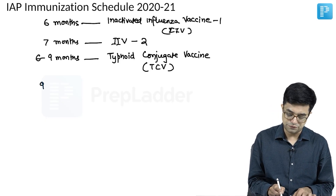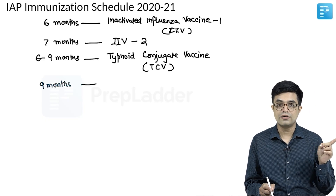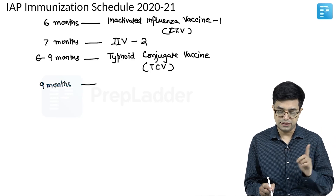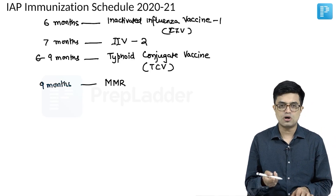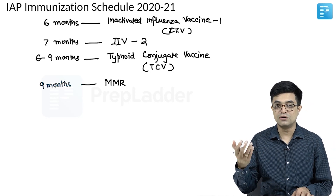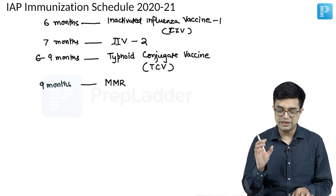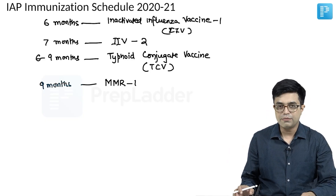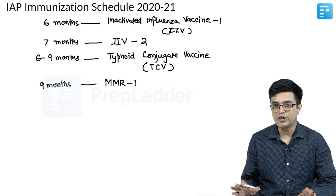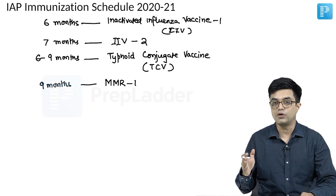Then at 9 months of age: in the national immunization schedule, MR1 and vitamin A are given. Here in the IAP schedule, you will use MMR1. Why not MR? Because MR alone or measles alone is not available in the private sector — what you get is only MMR as a combination. The IAP schedule talks about only MMR1 and does not include vitamin A at 9 months.